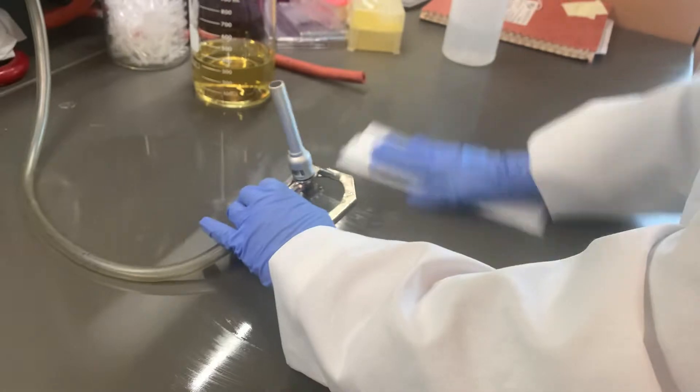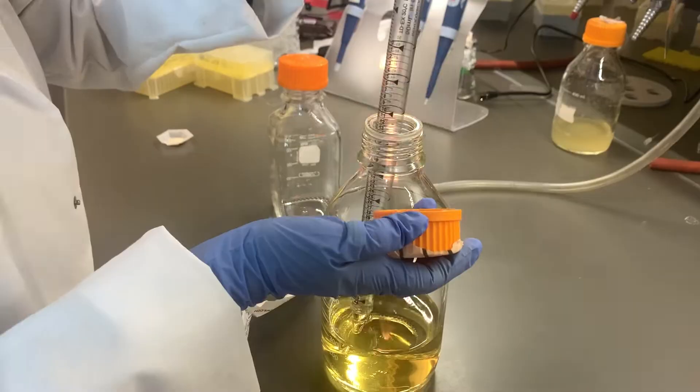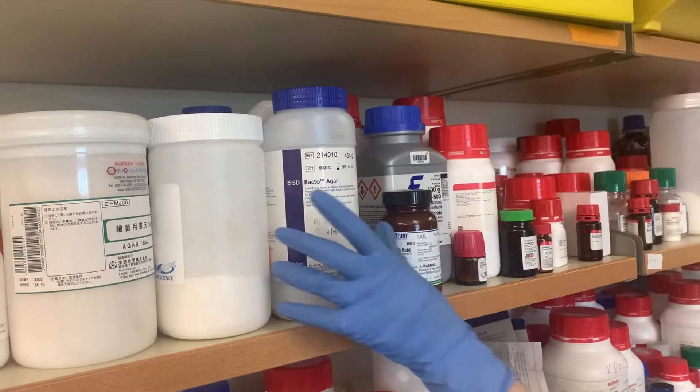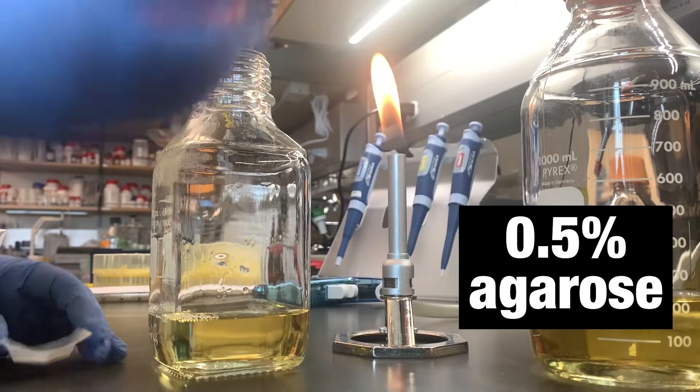To perform GVA, you'll first prepare your agar. GVA uses melted agar in cell culture medium at a final concentration of 0.5% after mixing with the sample.